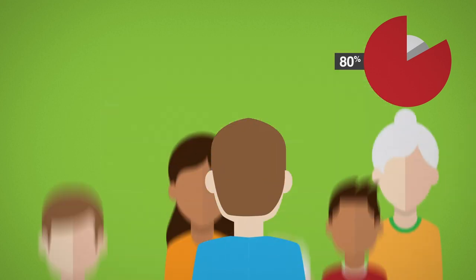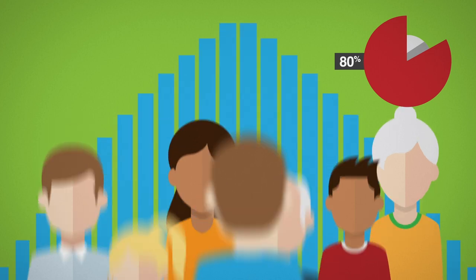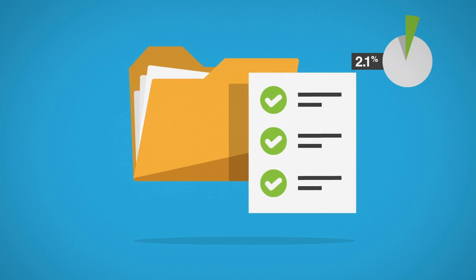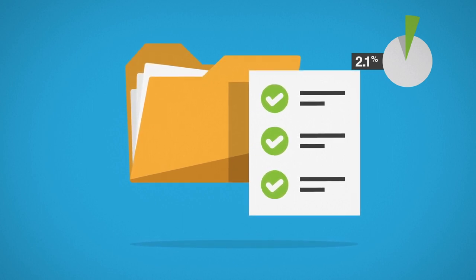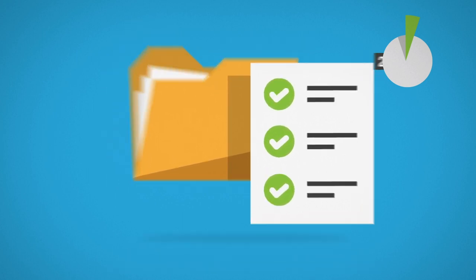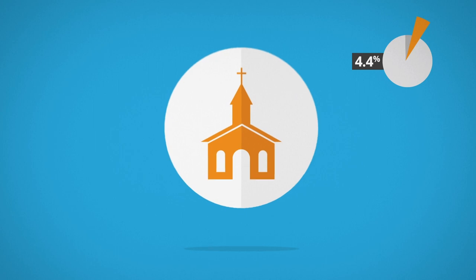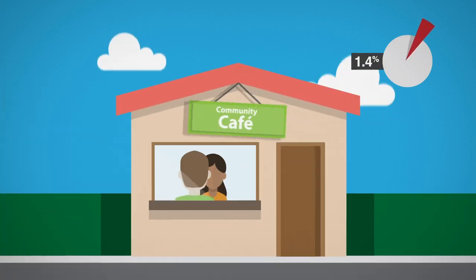As a charity, it's important that we have robust administrative and governance processes. This accounts for around 2% of our budget. A further 4.4% goes to the National Church.